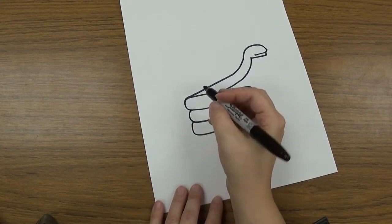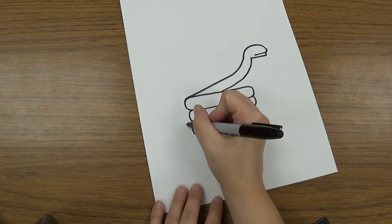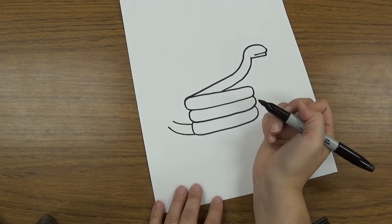And over here we're gonna draw his tail coming out. So it's gonna be coming out just like this, kind of like a curved rectangle. But it's not gonna connect at the end.